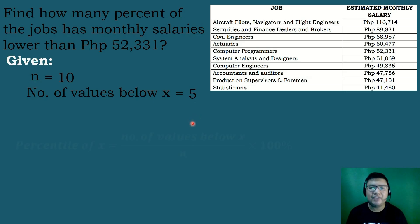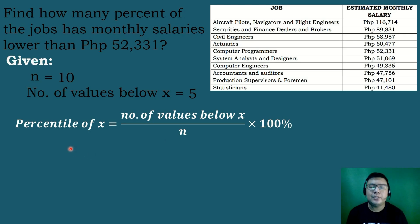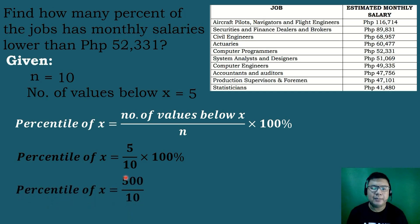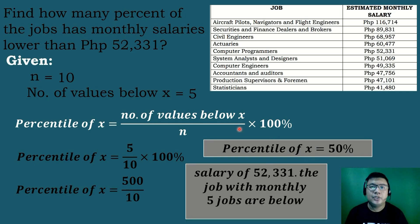After identifying the given, we use the formula for the percentile rank of ungrouped data: percentile of X equals the number of values below X over N times 100%. Substituting: 5 over 10 times 100%. Simplifying: 5 times 100 equals 500, divided by 10 equals 50. Therefore, 50% of the jobs have a monthly salary of 52,331 or less.